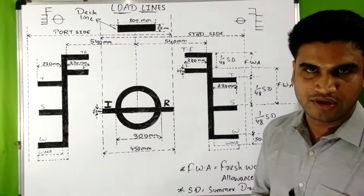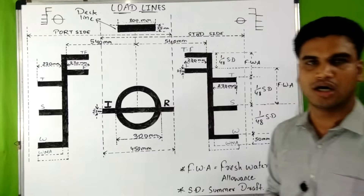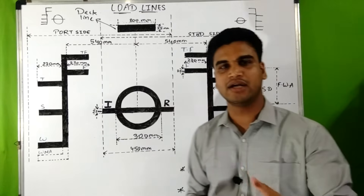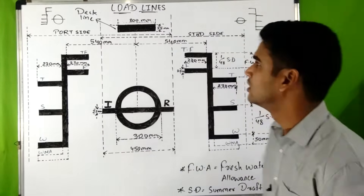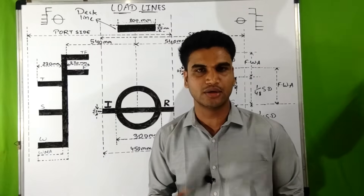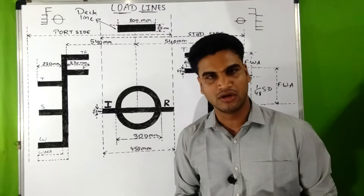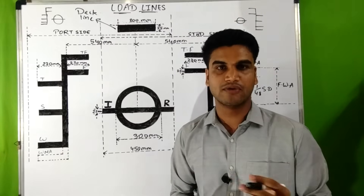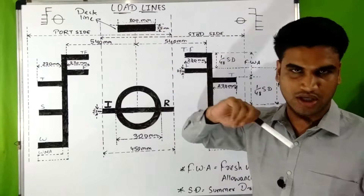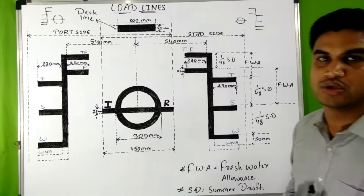The deck line measures 300 mm by 25 mm and is marked amidships on each side of the ship — port side as well as starboard side — at the position where the deck plate meets the shell plate. It is marked when the vessel is built and is an essential requirement under load line regulations. Freeboard is defined as the vertical distance from the top edge of the deck line down to the water level.